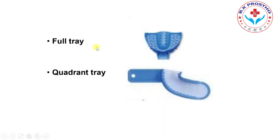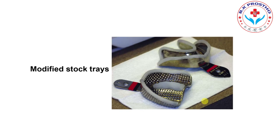Full tray or complete arch tray is used to record the impression of the full arch. If you want to record the impression of one quadrant, you use a quadrant tray — either maxillary right, left side, or mandibular right or left side. A modified stock tray is one that does not fit appropriately in the patient's mouth and requires modification. You can modify the tray with the help of wax or with compound to ensure a proper impression.